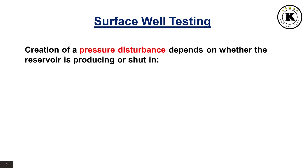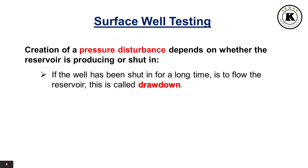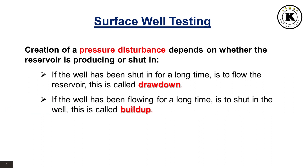Creation of a pressure disturbance depends on whether the reservoir is producing or shut in. If the well has been shut in for a long time, the action is to flow the reservoir — this is called drawdown. If the well has been flowing for a long time, the action is to shut in the well — this is called buildup.